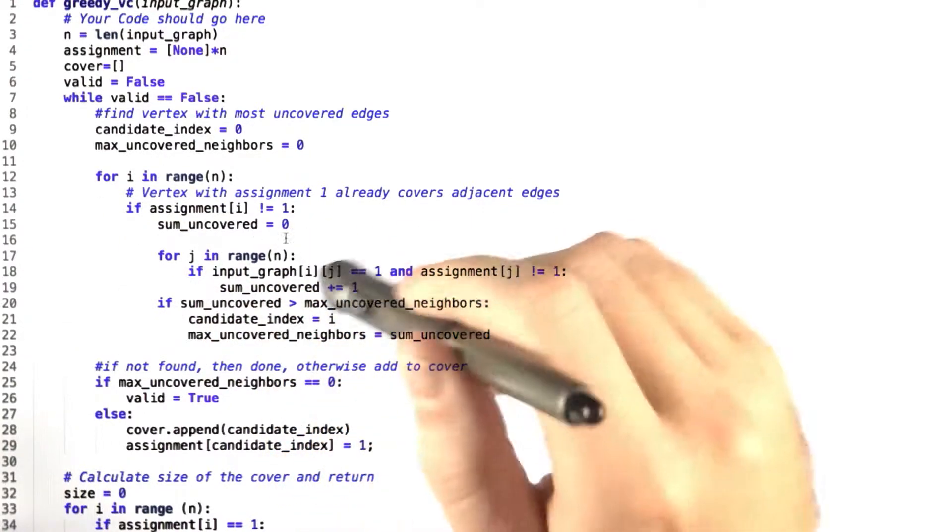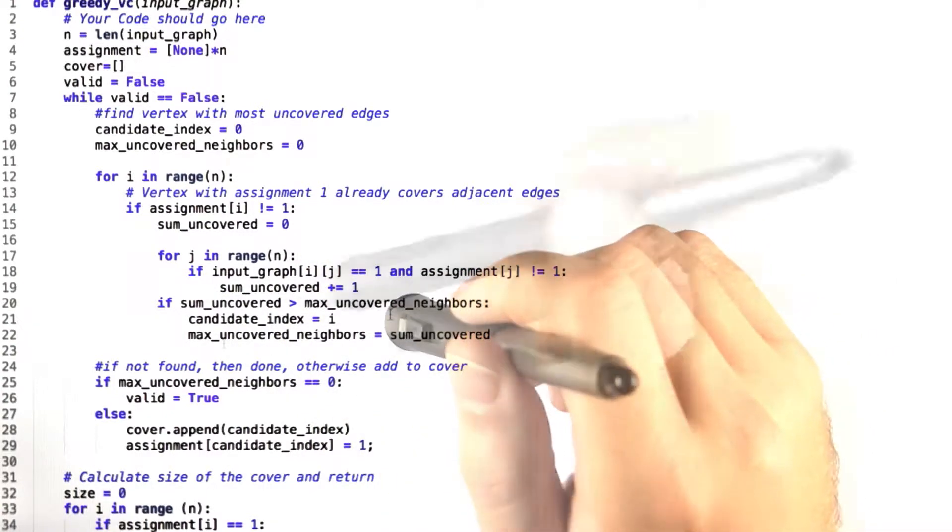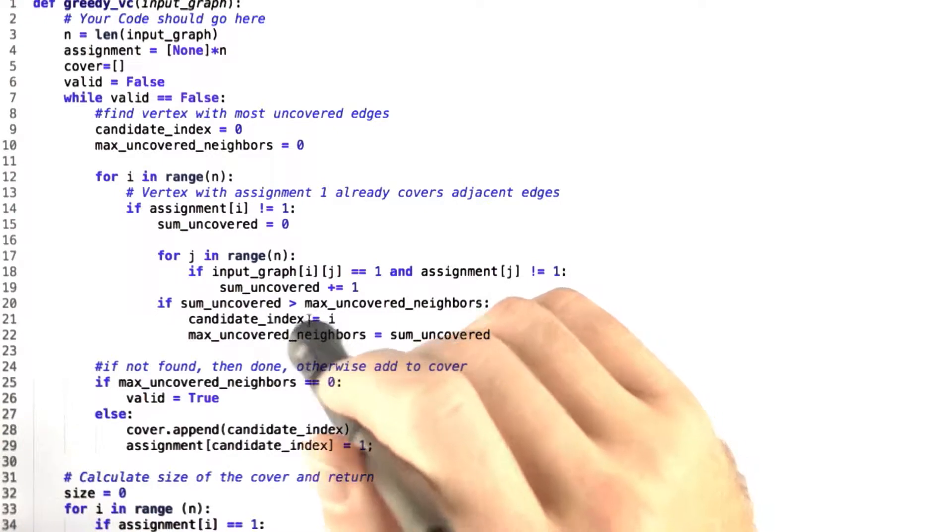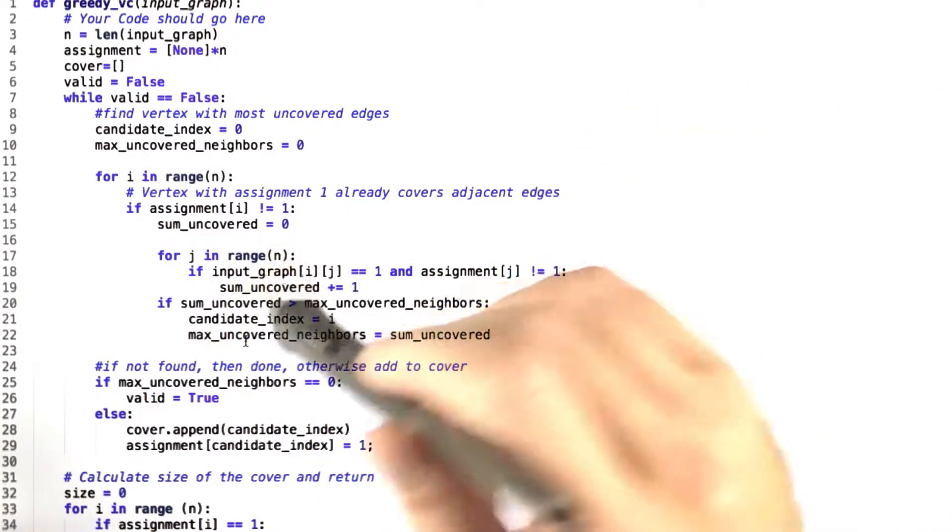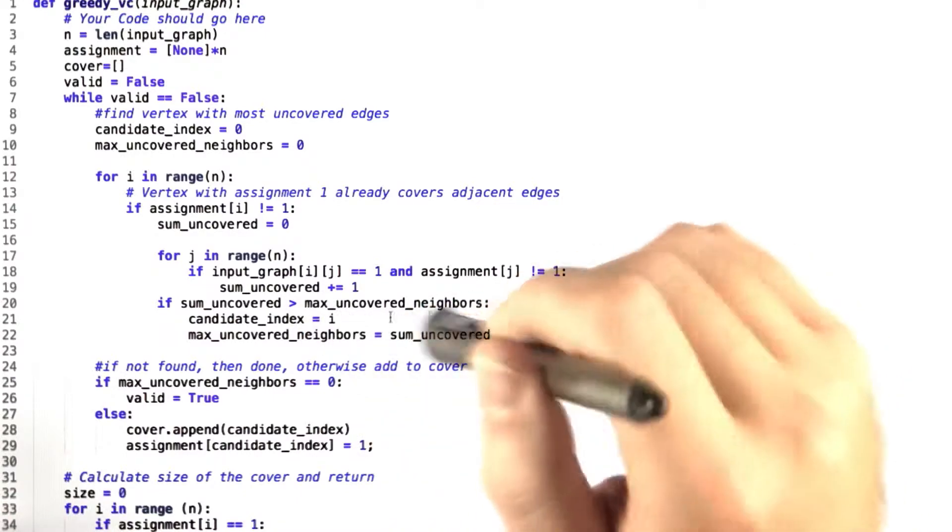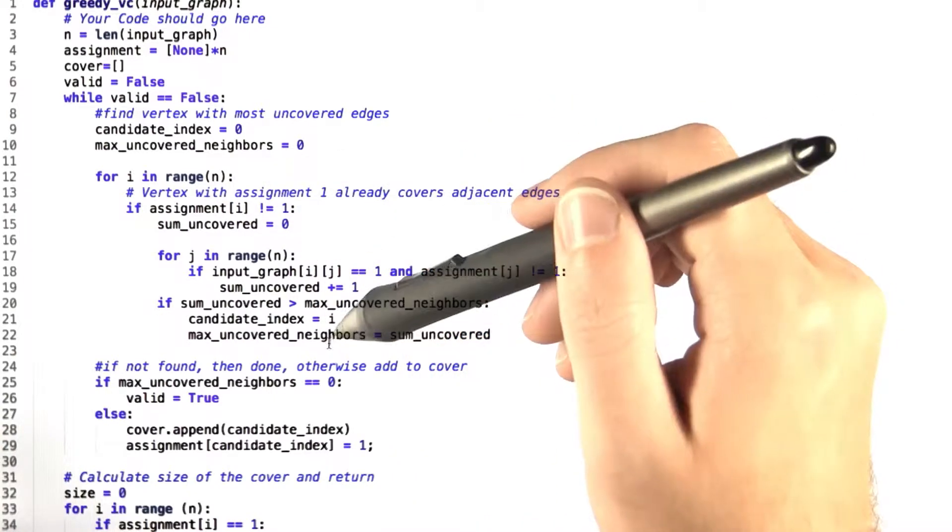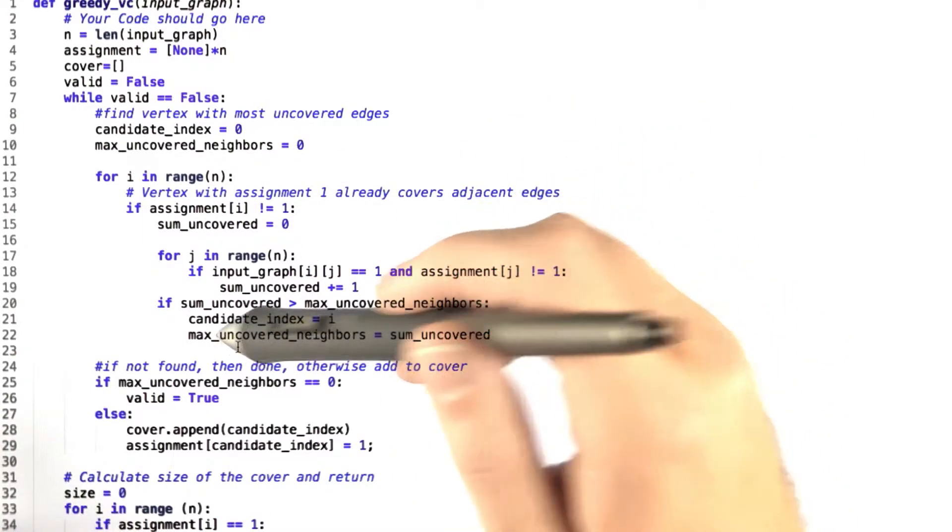Now, if the sum of the uncovered edges that we've just counted up is greater than the maximum uncovered neighbors, then we have a new candidate index for which vertex we should next add to the cover. And then we set the max uncovered neighbors to be sum uncovered which we just calculated. And then we keep looping through this for every vertex until we find the max uncovered.